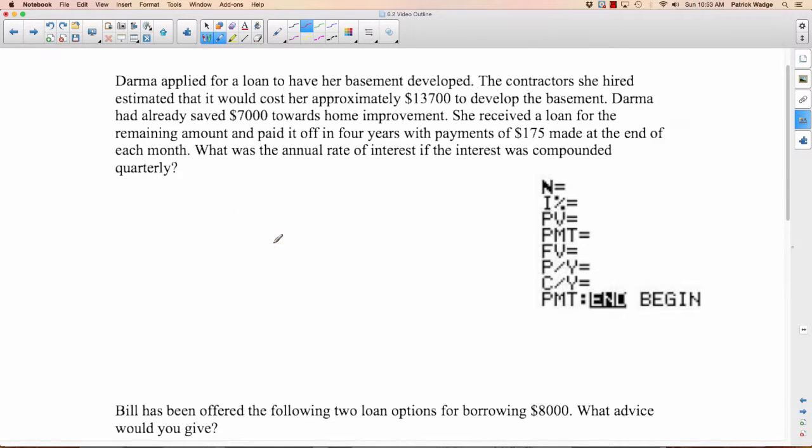Dharma applied for a loan to have her basement developed. The contractor she hired estimated it would cost approximately $13,700 to develop the basement. Dharma had already saved $7,000 towards home improvement. She received a loan for the remaining amount and paid it off in four years with payments of $175 made at the end of each month. What was the annual interest rate if the interest was compounded quarterly?